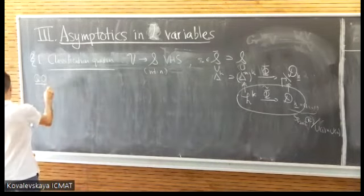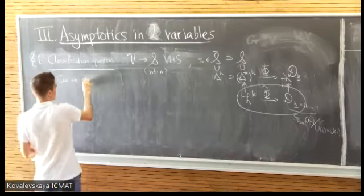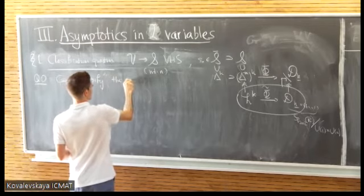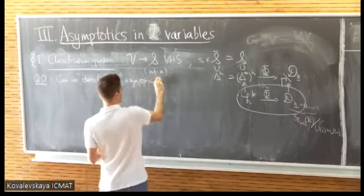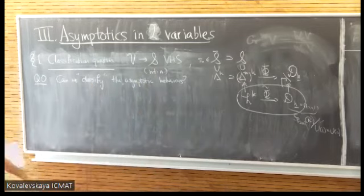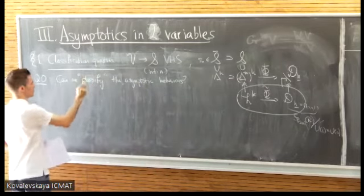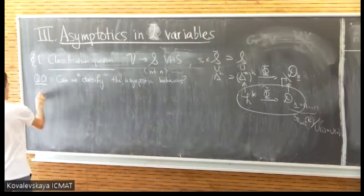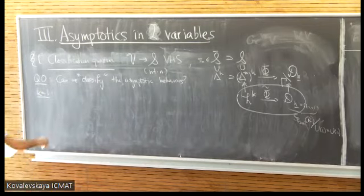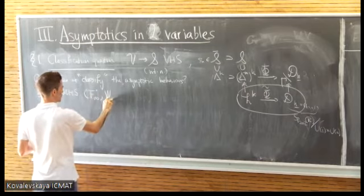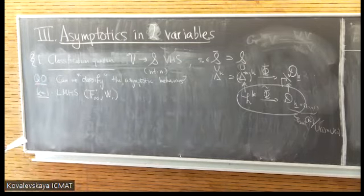Question zero: can we classify this asymptotic behavior? Any naive approach to this question might produce a kind of wild problem. The problem is it's so wild. You look at the limiting mixed Hodge structures F-infinity, together with the weight monodromy filtration that depends on the monodromy logarithm.